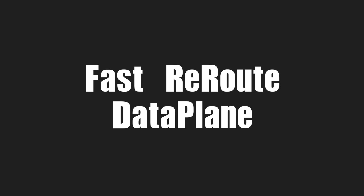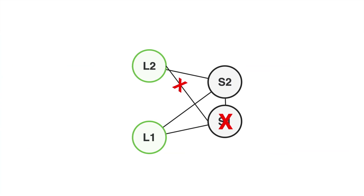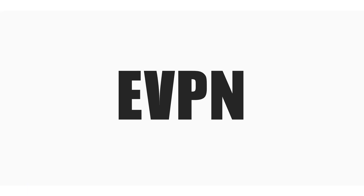The first failure scenario is in the core, like when a node goes down or a link goes down in the core. When we are talking about the MPLS data plane, we are typically talking about a P-Router or SPINE, and this is completely service agnostic. So when this failure happens, transport will take care of it. Typically, when you are using MPLS with segment routing, TI-LFA will provide fast convergence.